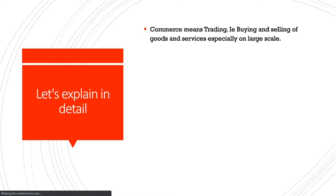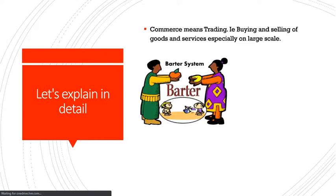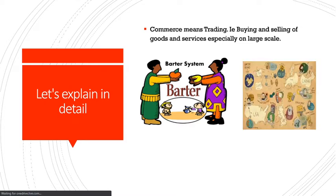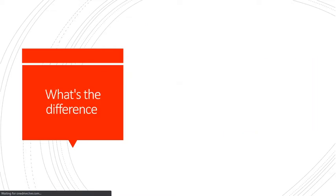Commerce means trading — that is, buying and selling of goods and services, especially on a large scale. Remember the barter system? It was the first time people went in person, physically, to a market to exchange goods. Now we have shifted from the barter system all the way to bitcoins — that is all about e-commerce. So commerce is basically trading, and e-commerce is electronically trading your goods and services.